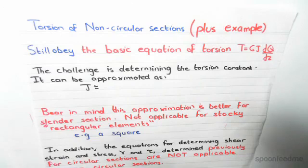Torsion of non-circular sections plus an example will be presented to you in the following video. First of all, non-circular sections still obey the basic equation of torsion which is T equals GJ d theta dz, but the problem is determining an exact value of the torsion constant.